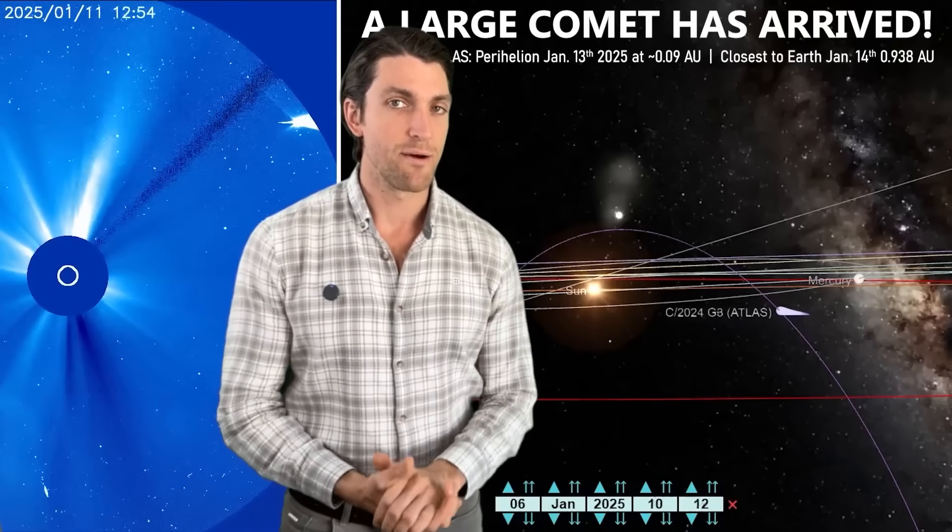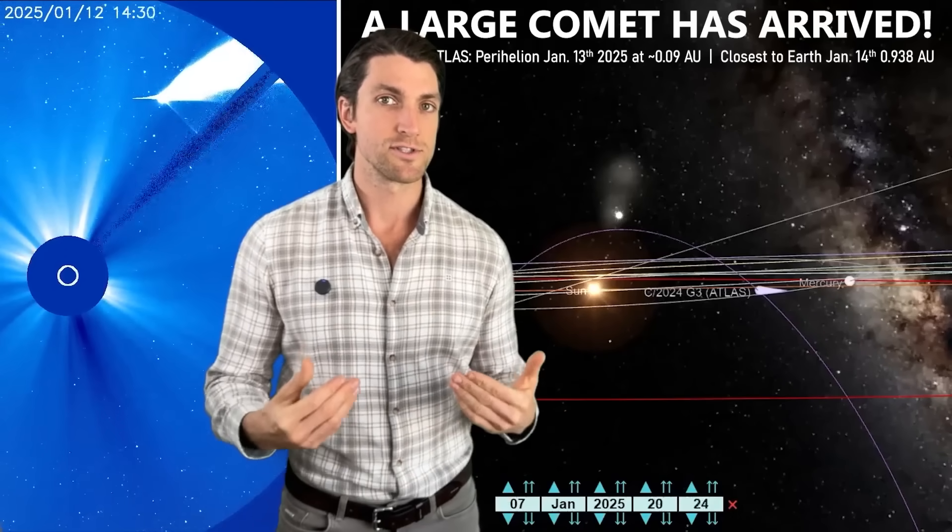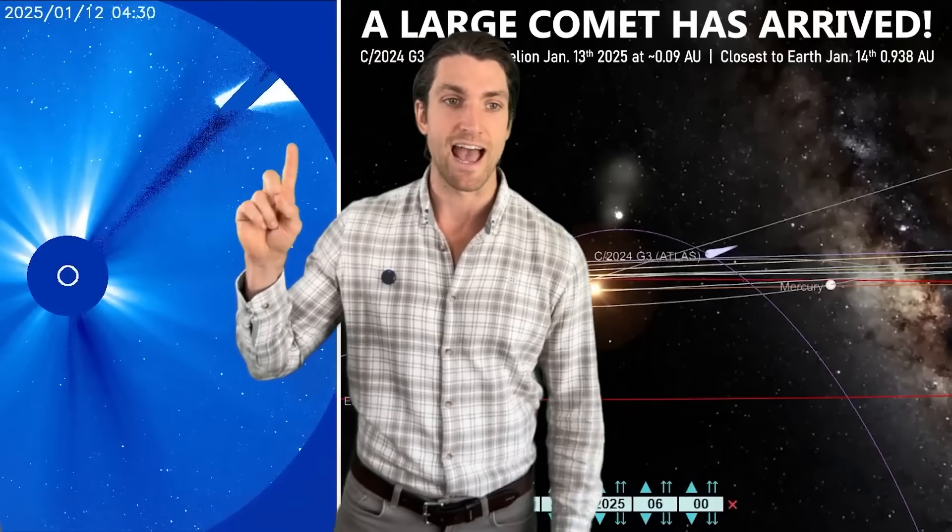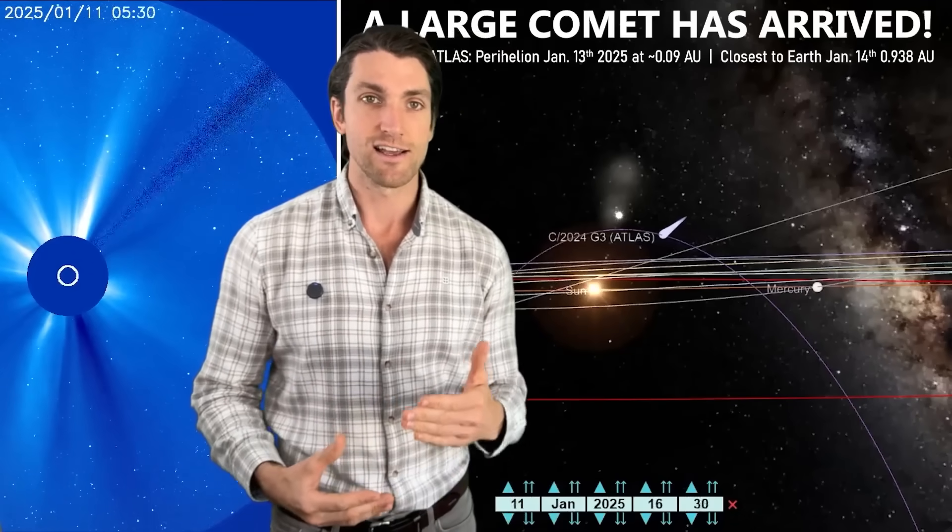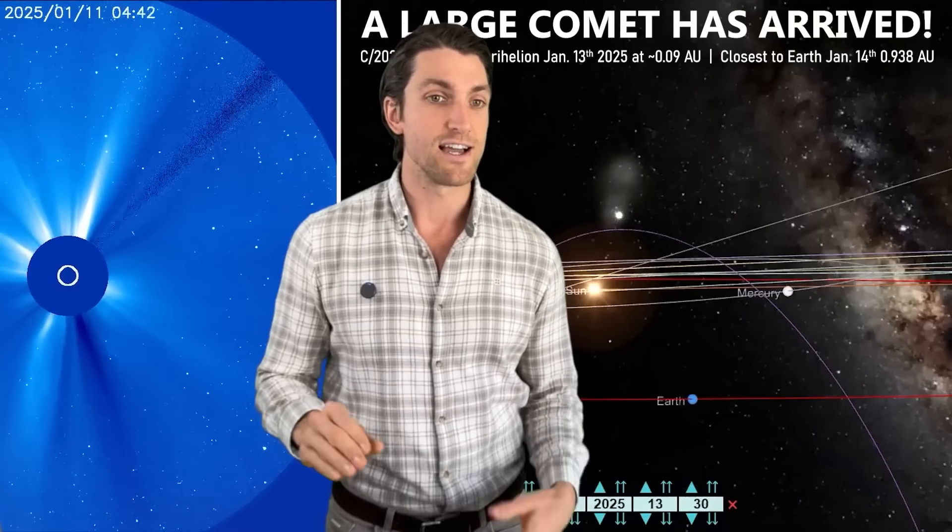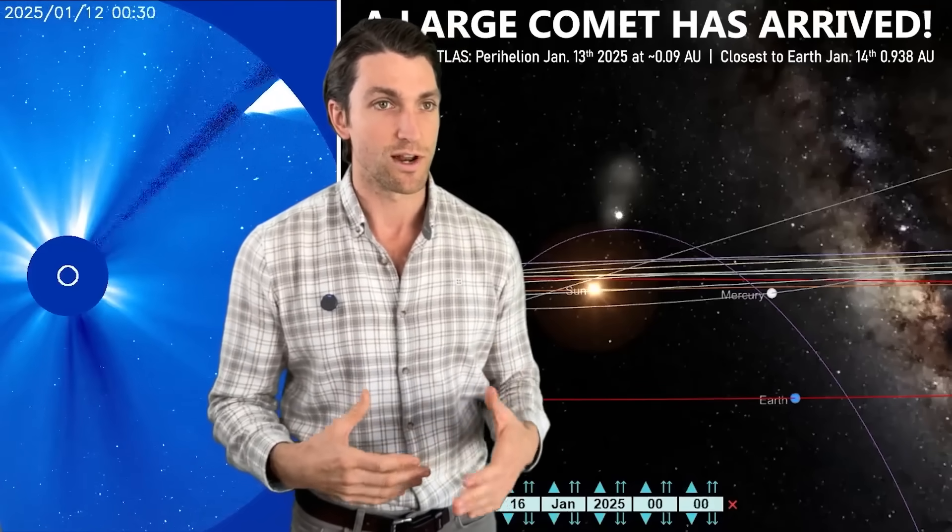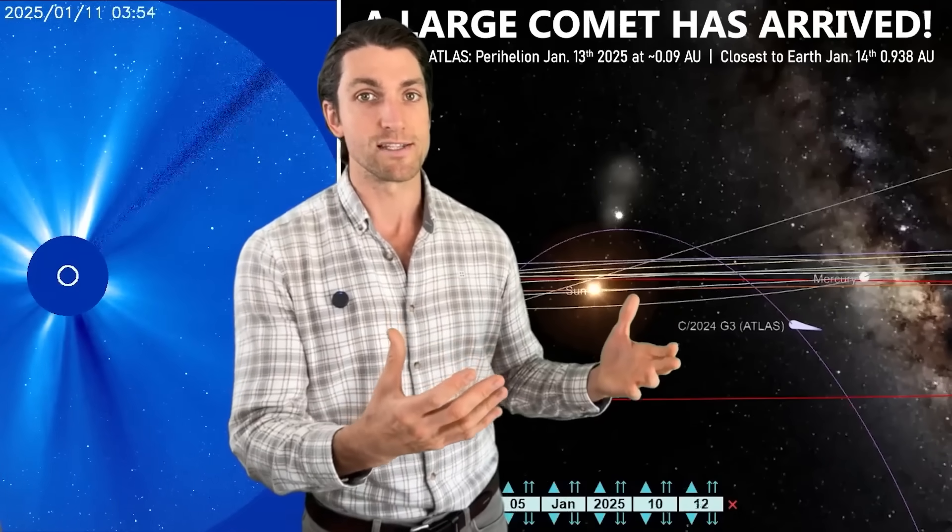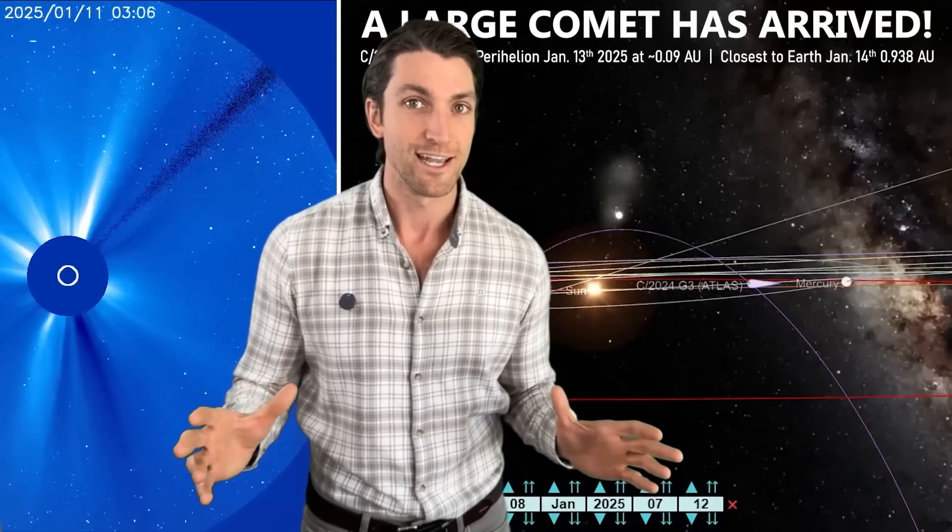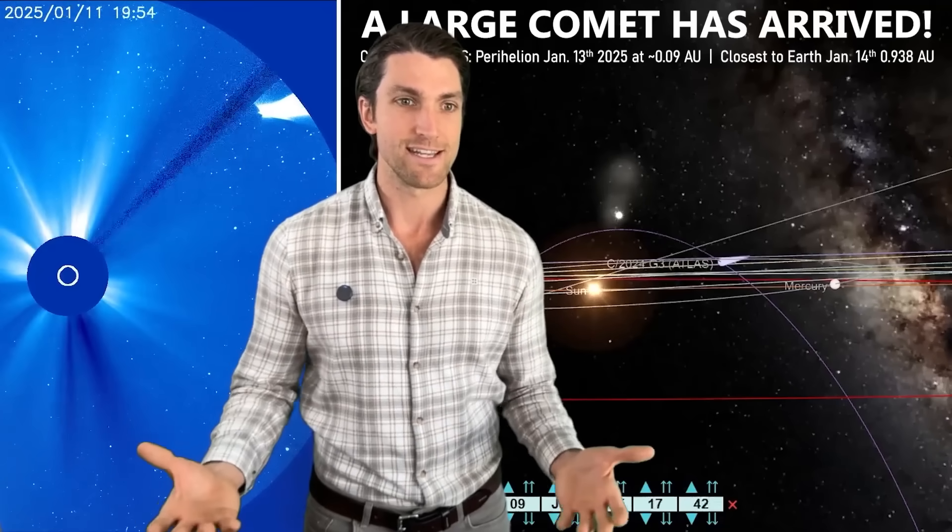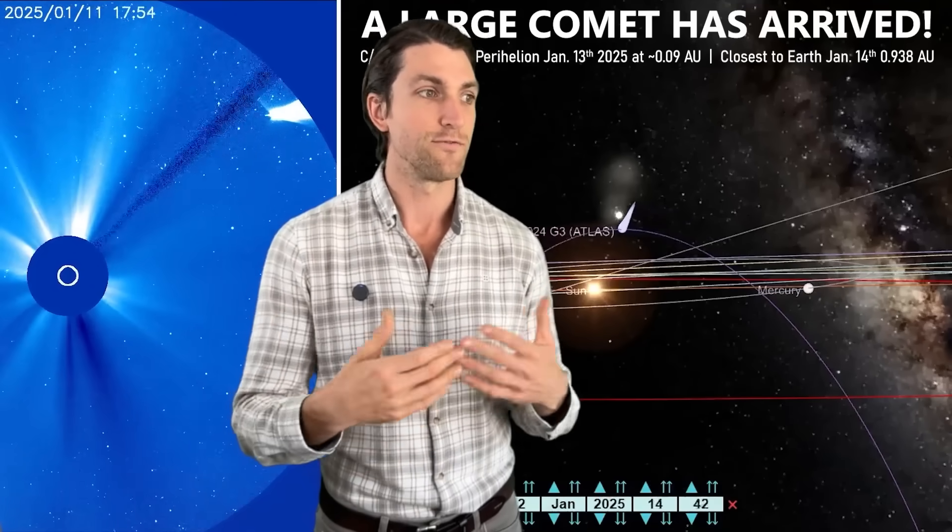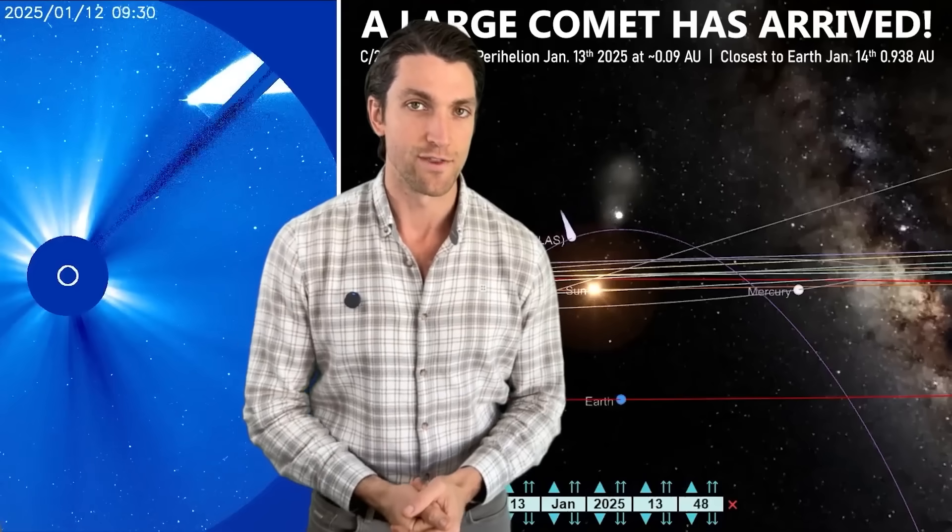This is the second large comet that's flown into the inner solar system in under six months. The first one was comet Tsuchinshan in October, and now we have the Atlas comet here in January. And it's not like that's never occurred before. We have comets flying in all the time, though for them to be of this size at this frequency is a little unusual. And I'm sure the ancient peoples who viewed comets as omens of great change and fated events would be looking up very nervously right now. But we'll just have to wait and see if this comet survives perihelion and does appear in the evening sky. And we'll also just have to wait and see what unfolds on the world stage over the next few weeks and months.